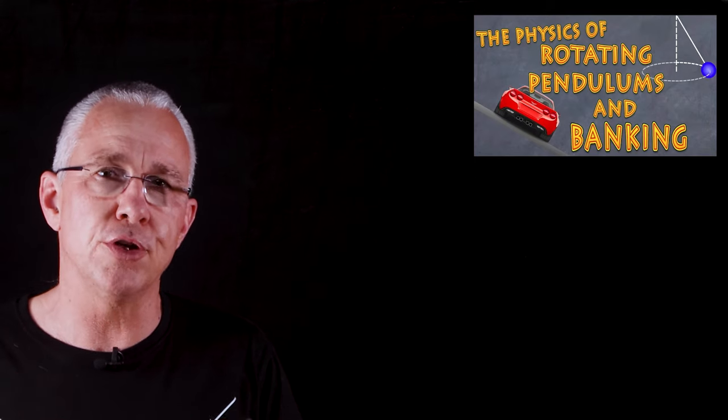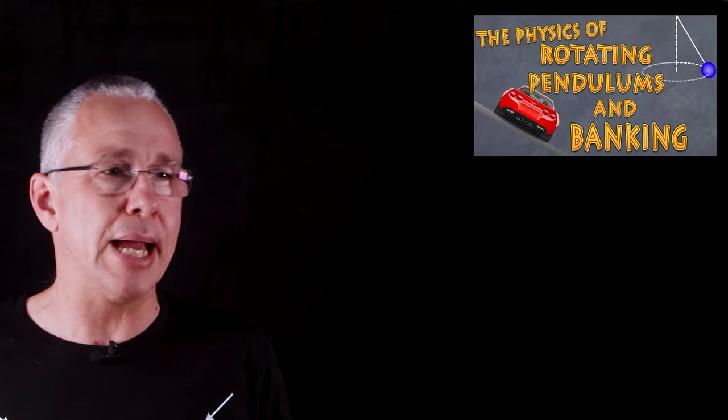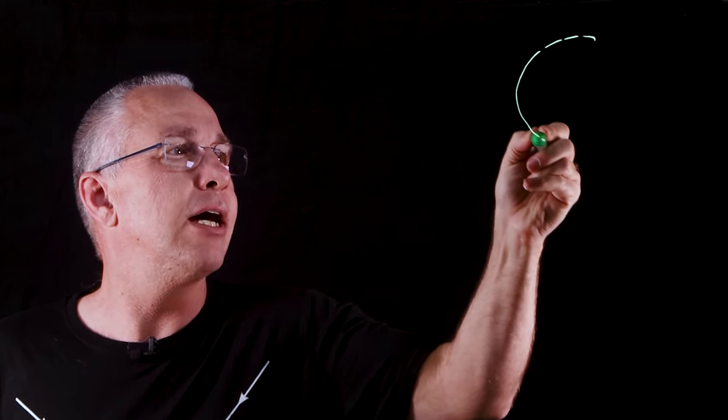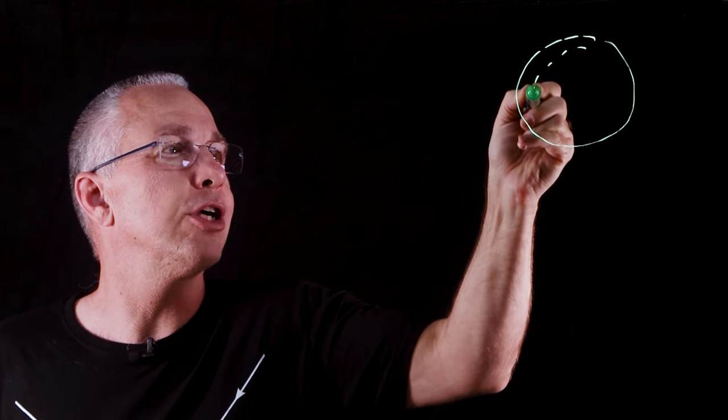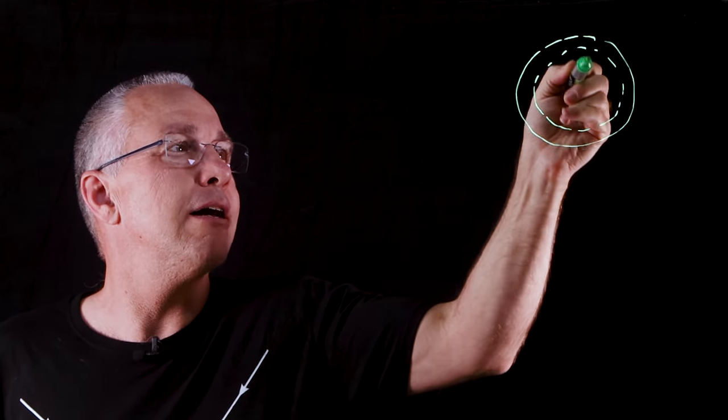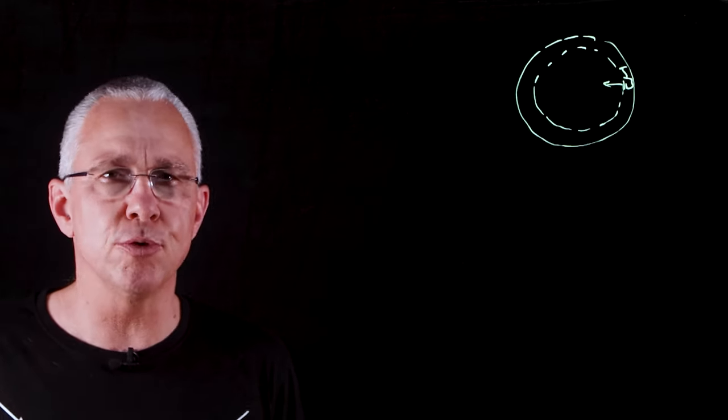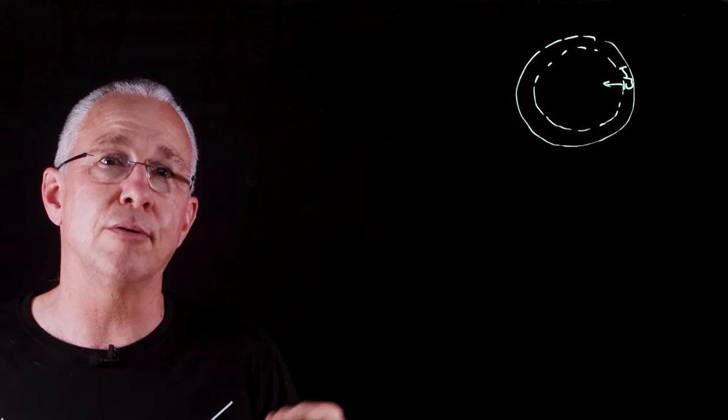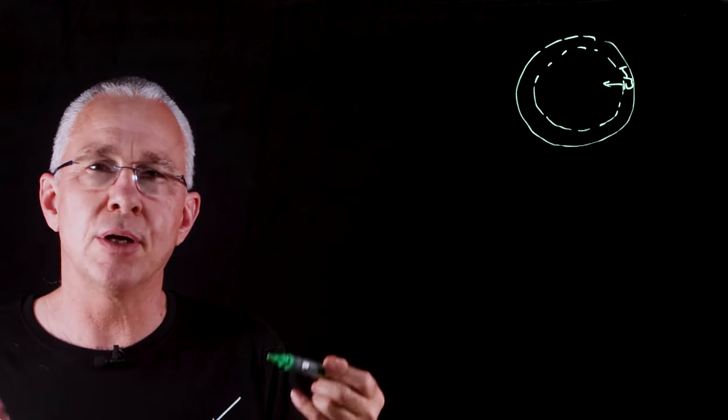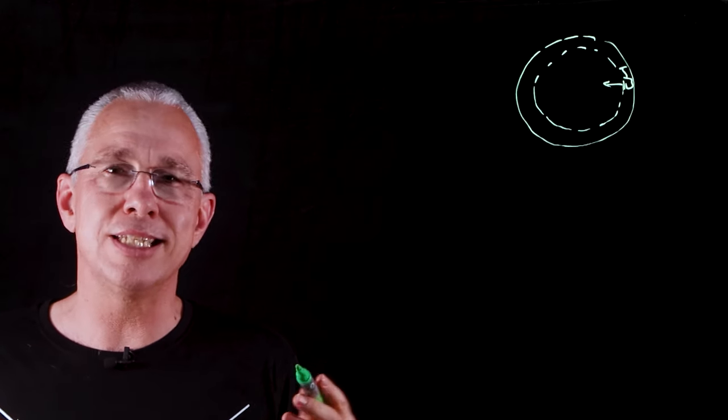Now what is a banked curve? Well we have a car that is going around a track that is circular, and I'm going to draw it over here. We obviously have a centripetal force that is resulting in the car remaining in the circle. But often what they do with the road surfaces is they bank them, they put them on an angle because that increases the opportunity to travel faster around that curve.